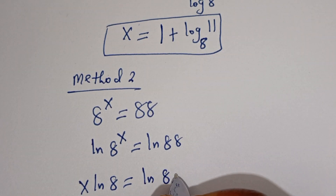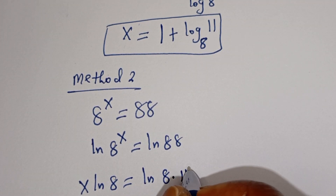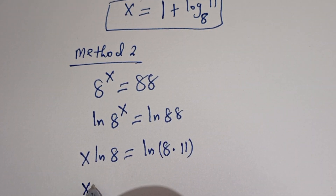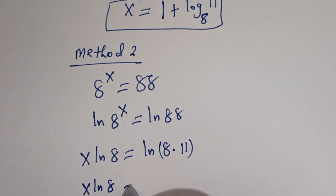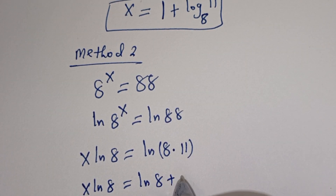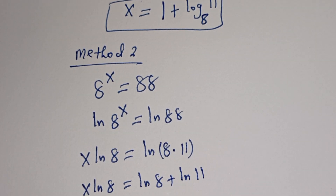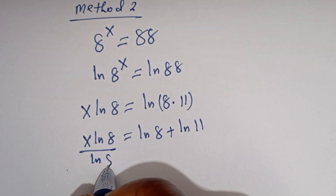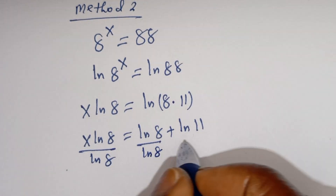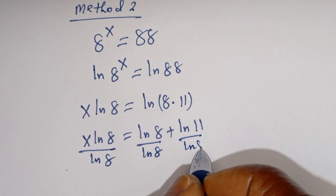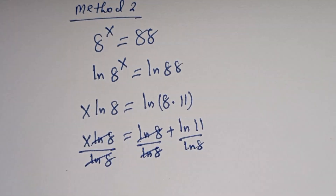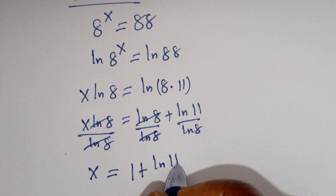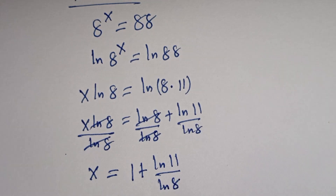Here we have s ln of 8 is equal to ln of 88, which can be written as ln of 8 multiplied by 11. And here we have s ln of 8 is equal to ln 8 plus ln 11. Now let's divide both sides by ln of 8. This will cancel, giving us s is equal to 1 plus ln of 11 divided by ln of 8.